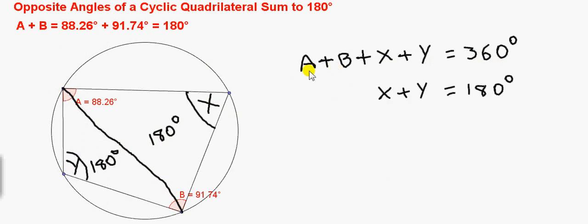So if A plus B sum to 180 degrees, which is what the theorem says, then 180 plus X plus Y equals 360. So X plus Y must also sum to 180. So we only have to consider one pair of opposite angles in the proof. The other pair automatically sum to 180 degrees.